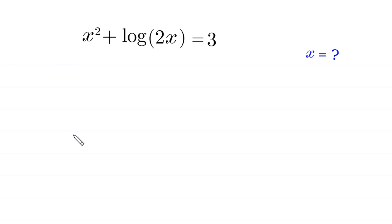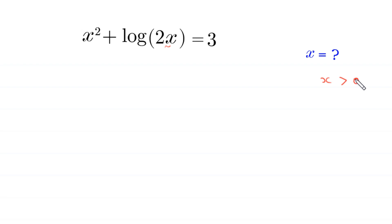Welcome everyone. We are going to solve a nice logarithmic equation: x squared plus log of 2x is equal to 3. Our job is to find all possible values of x. Since x is in the logarithmic function, x must be greater than 0, because log of 0 and negative numbers is undefined.